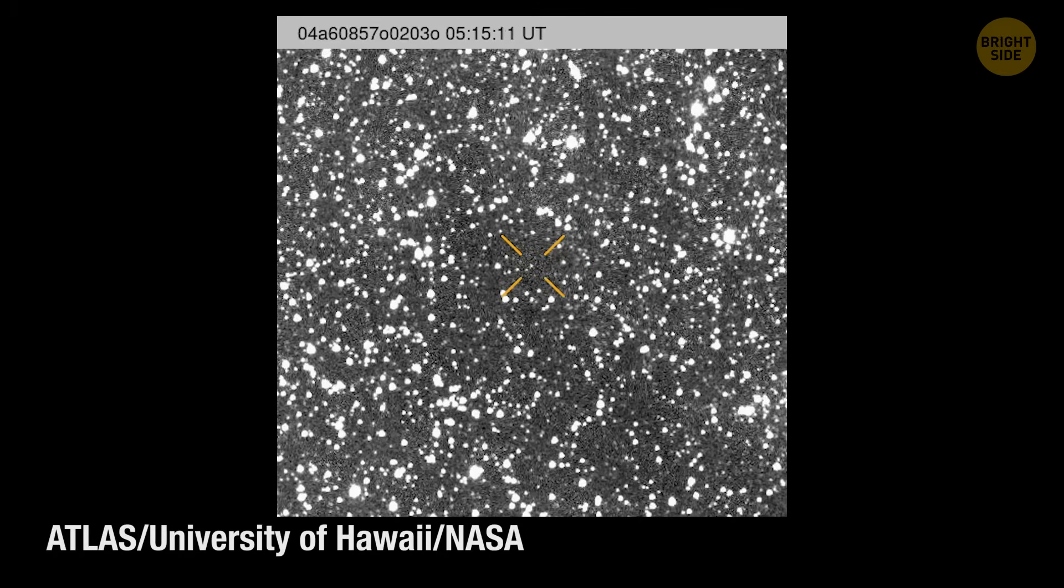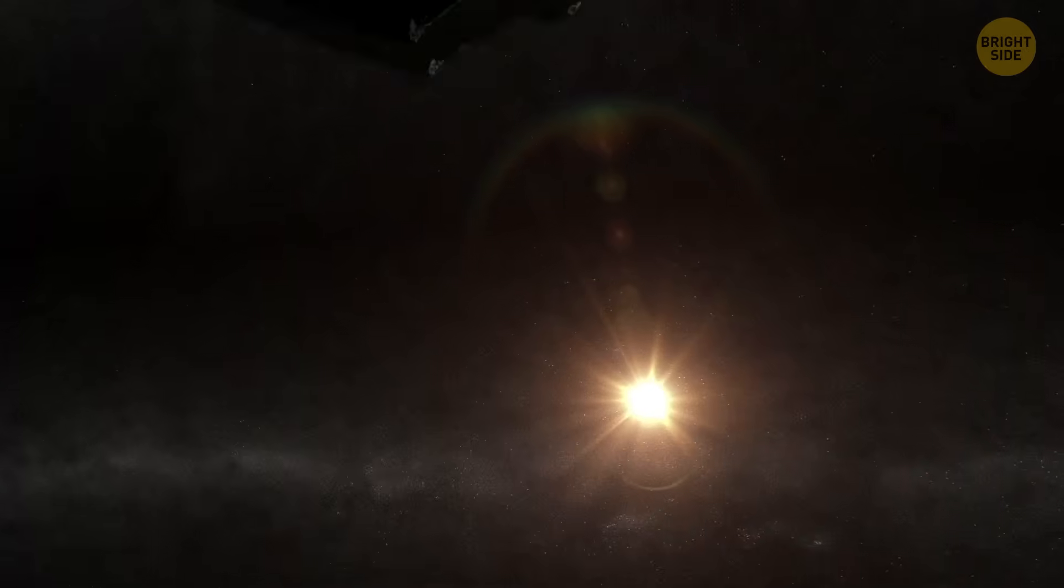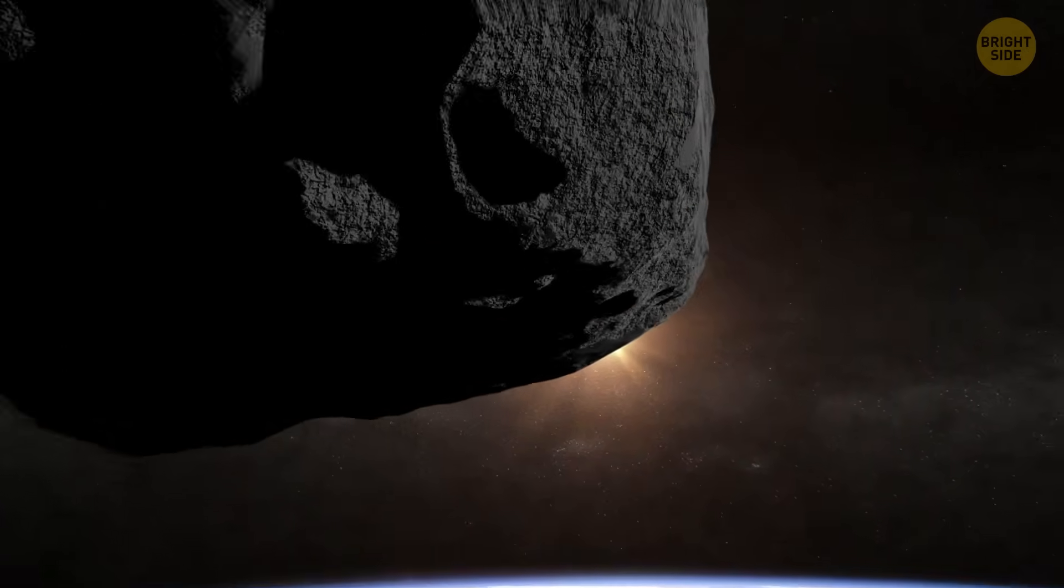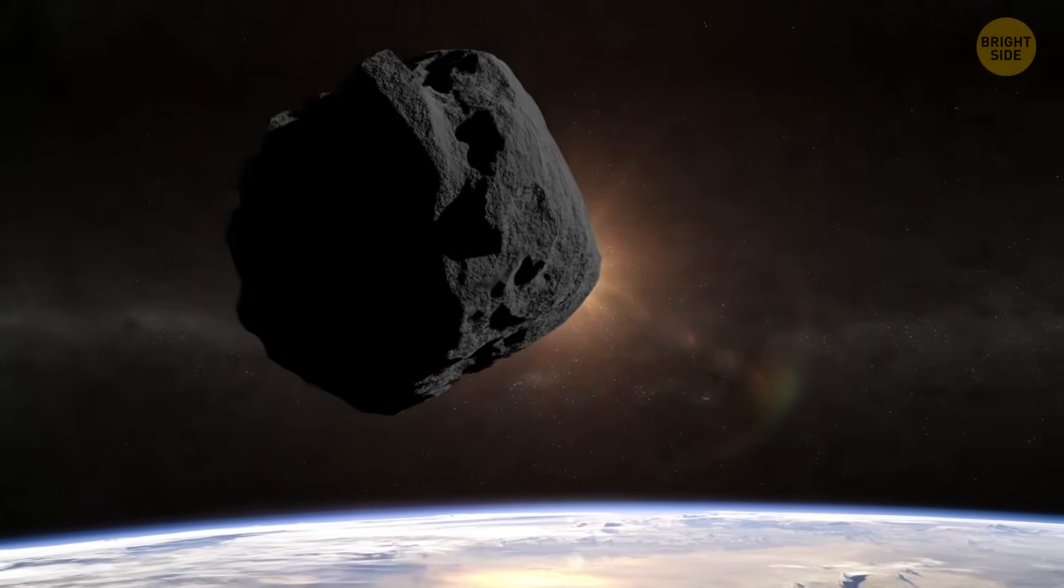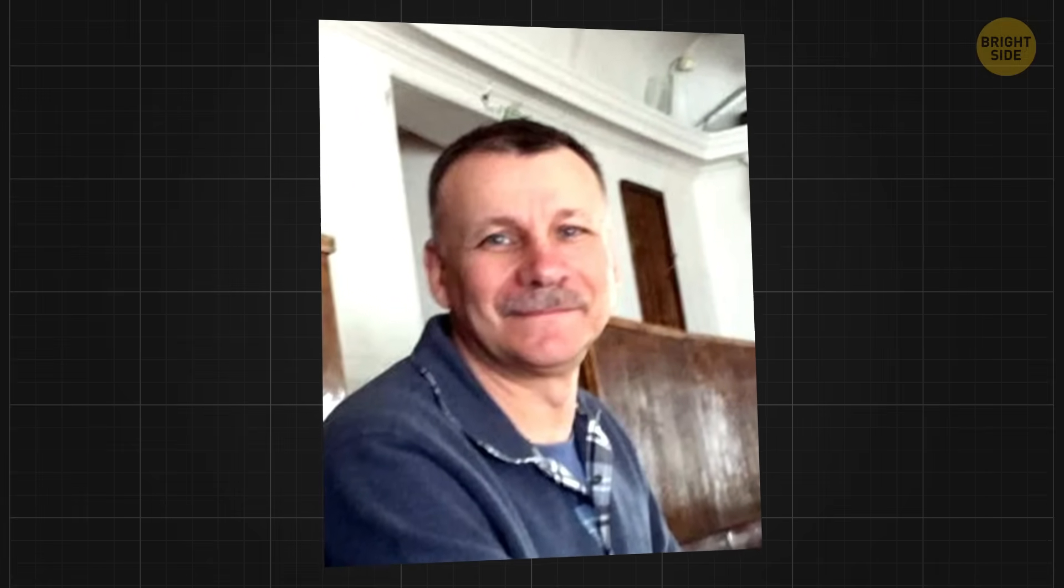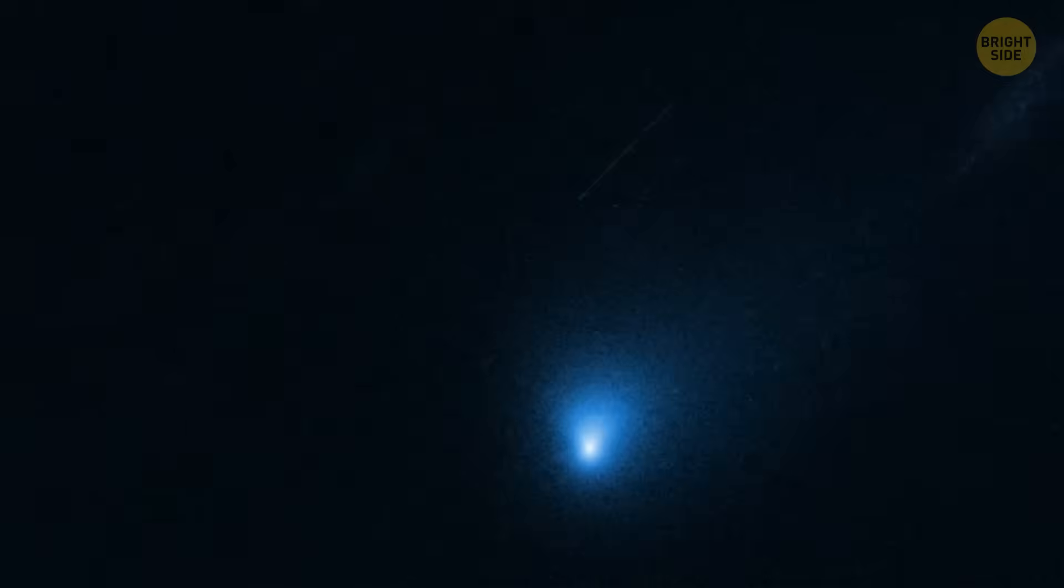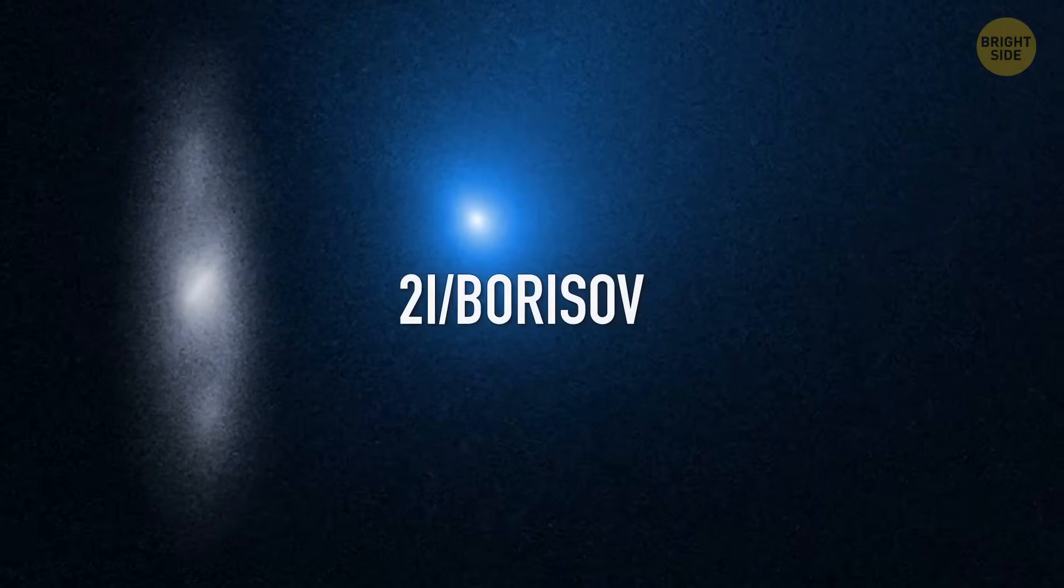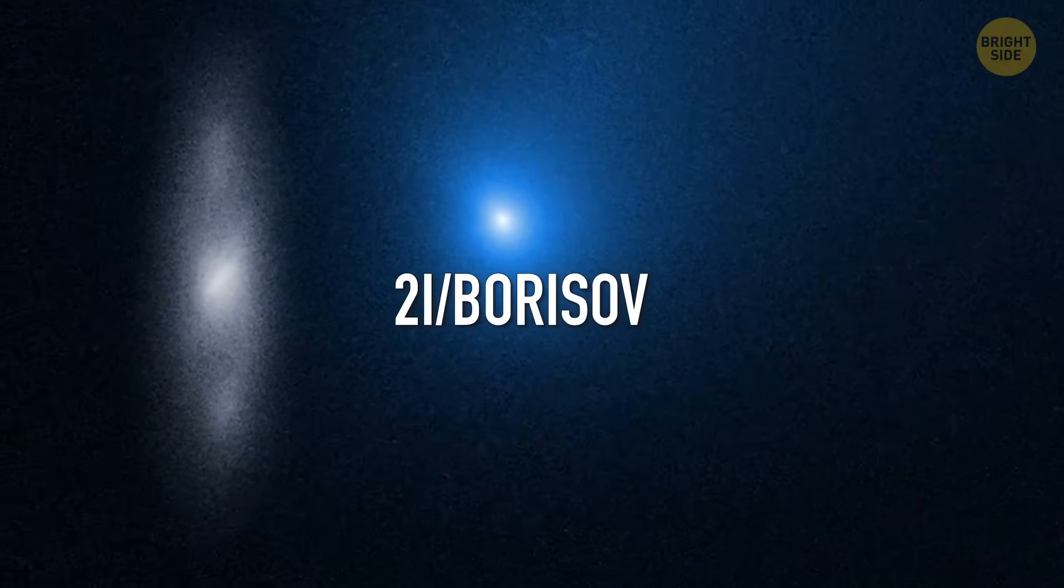They first spotted it inside our solar system. And people are paying attention because it showed up not long after 3I Atlas passed near our sun. On November 2, 2025, astronomer Gennady Borisov, the same person who discovered interstellar comet 2I Borisov in 2019, found this new object.